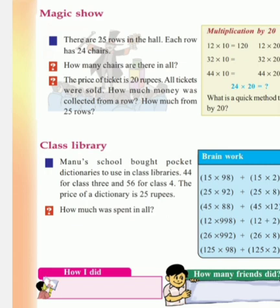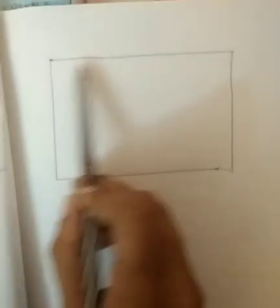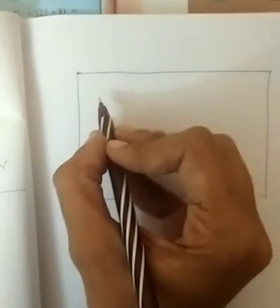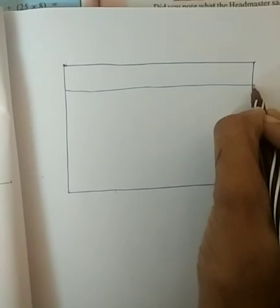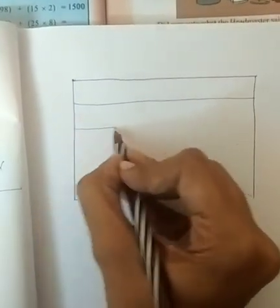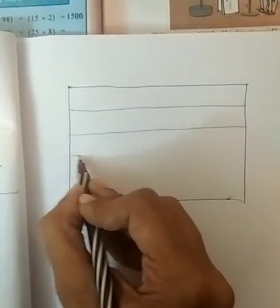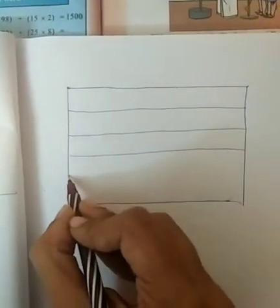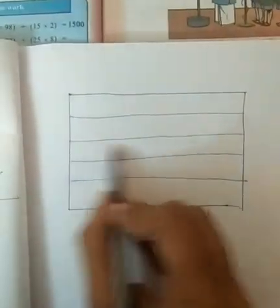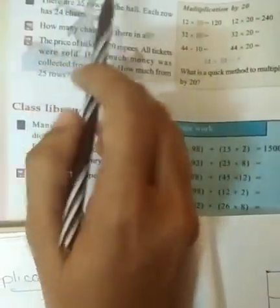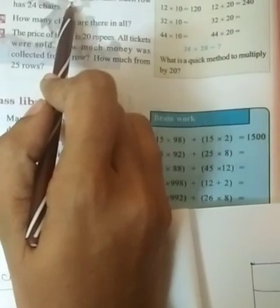In this question they gave the number of rows and the number of chairs in each row. Do you know what is a row? Look here. Suppose this is a hall. This is one row. This is another row. These are called rows. Here we can see 1, 2, 3, 4 rows — like that. In the magic show hall we can see 25 rows.